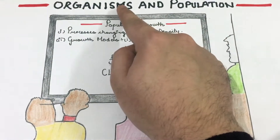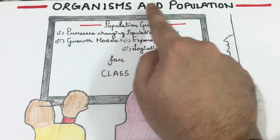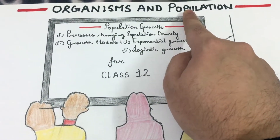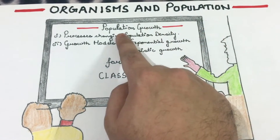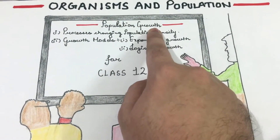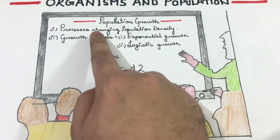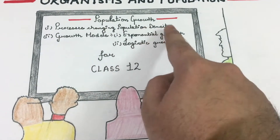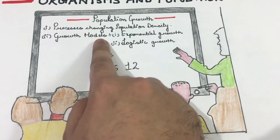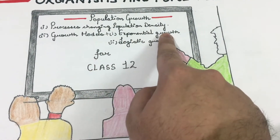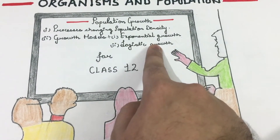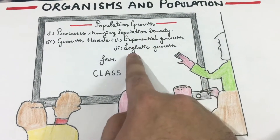Hello students, this is the fifth video of Organism and Population. The topic of today is population growth, in which we will study processes changing population density, the exponential growth model, and the logistic growth model. So let's start.